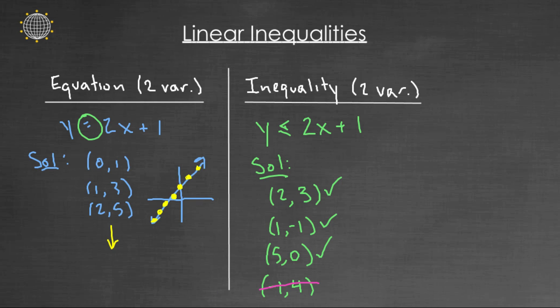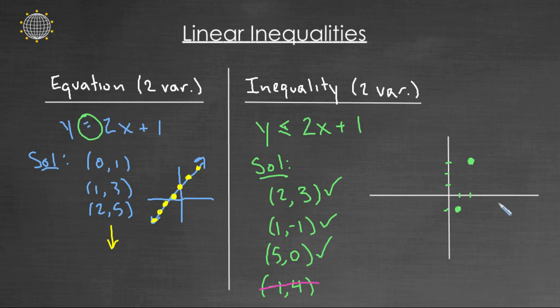Here's what I want to point out: take a look at what happens if we try to plot or graph where these ordered pairs are. Two comma three is here, one comma negative one is right here, five comma zero is here — these are all good. And then negative one comma four, which is right about here, is bad. Now we're confused because these good points don't line up in a straight line like they did for linear equations.